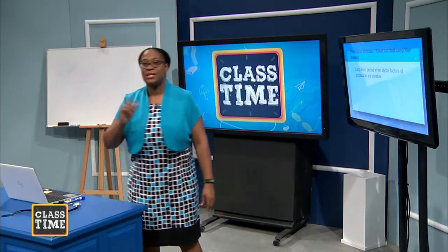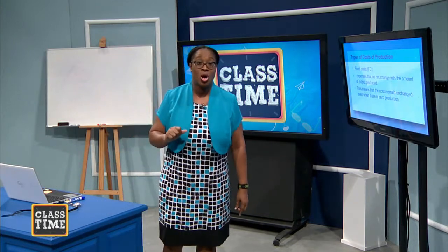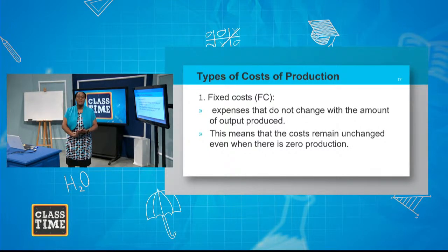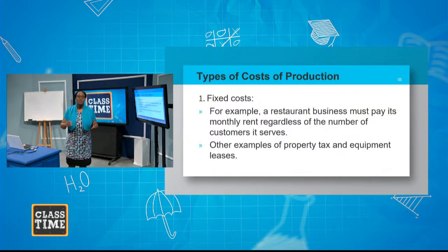Now let's look at the types of cost of production. The first is fixed cost. As the term suggests, these costs do not change — they are expenses the business must cover whether or not they are producing anything at all. If they produce zero units, they must still pay those costs. If they produce 100 units, those costs remain the same. Can you think of any costs a business must cover even if not producing?